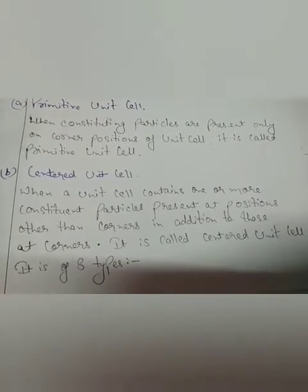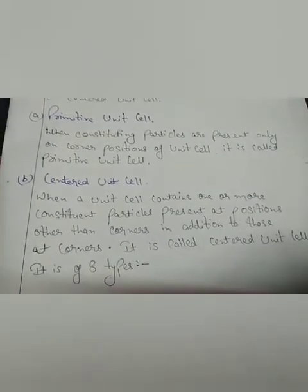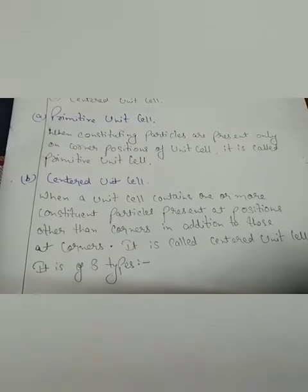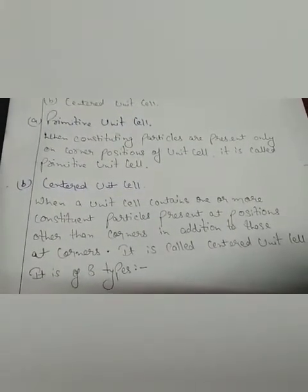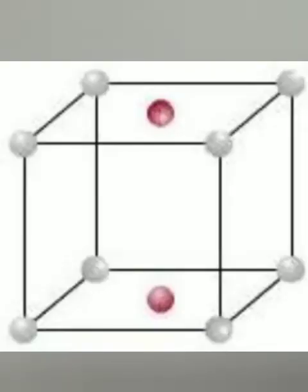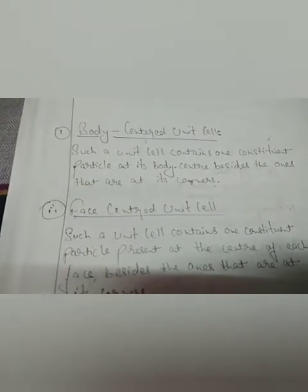Centered unit cell: When a unit cell contains one or more constituent particles present at positions other than the corners, in addition to those at the corners, it is called a centered unit cell.